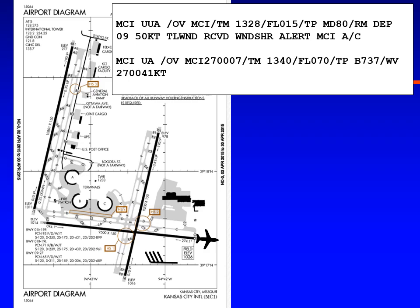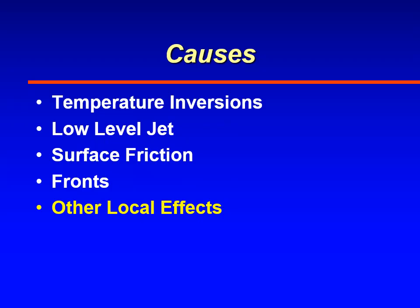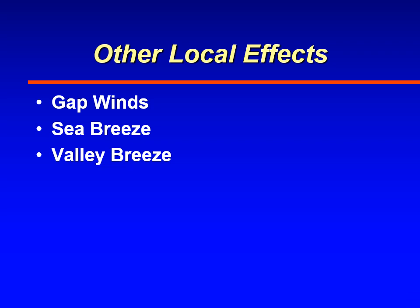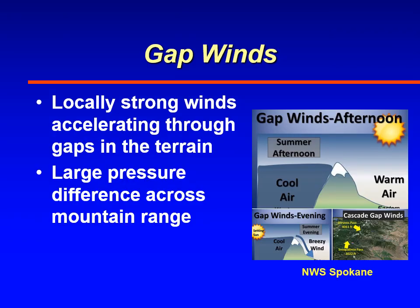The last cause we'll discuss is what we'll classify as other local effects. Local winds such as gap winds, sea breeze winds, and valley breeze winds can cause low-level wind shear in local areas. Gap winds are locally strong winds that accelerate through gaps in the terrain — through a mountainous range or a smaller ridge line — where there's a big pressure gradient from one side to the other, usually from cold dense air on one side and warmer air on the other.